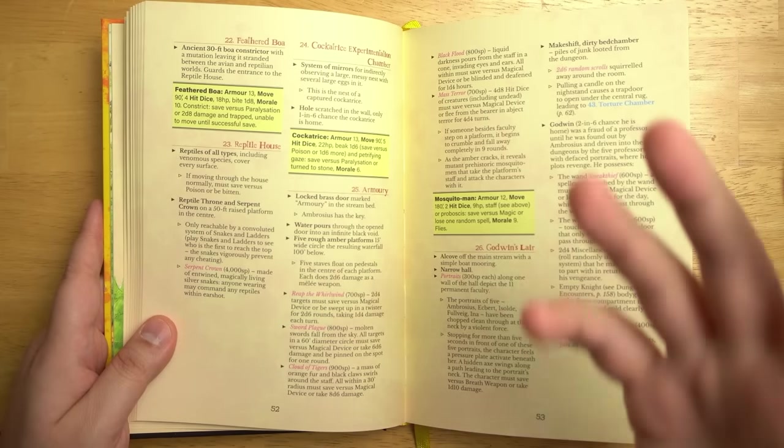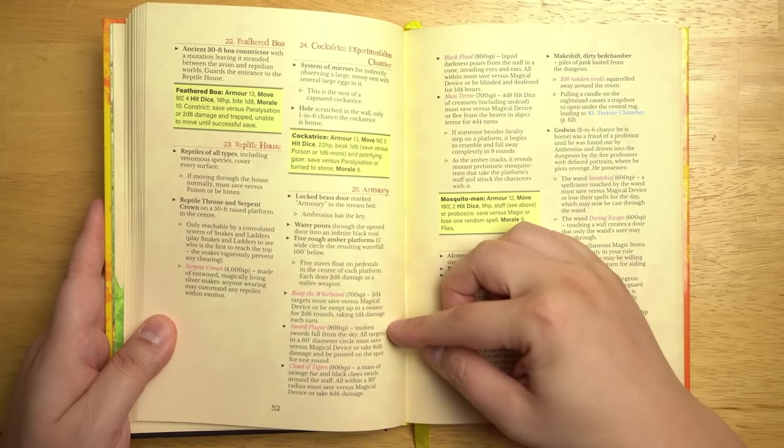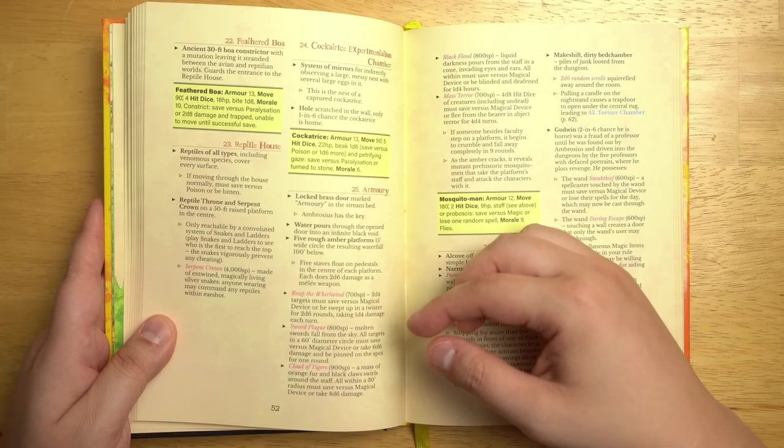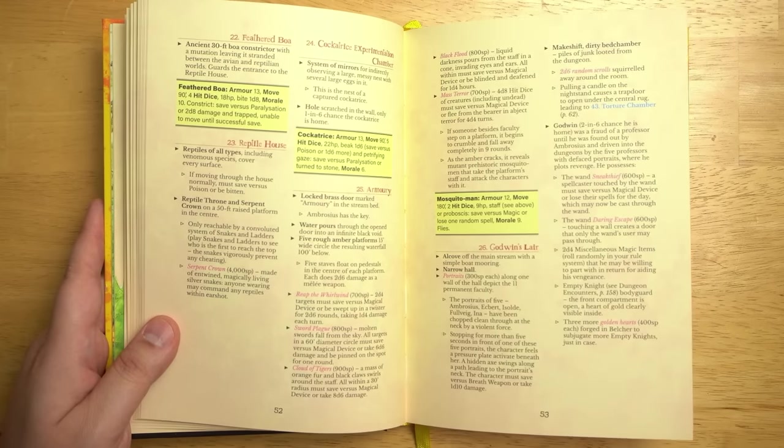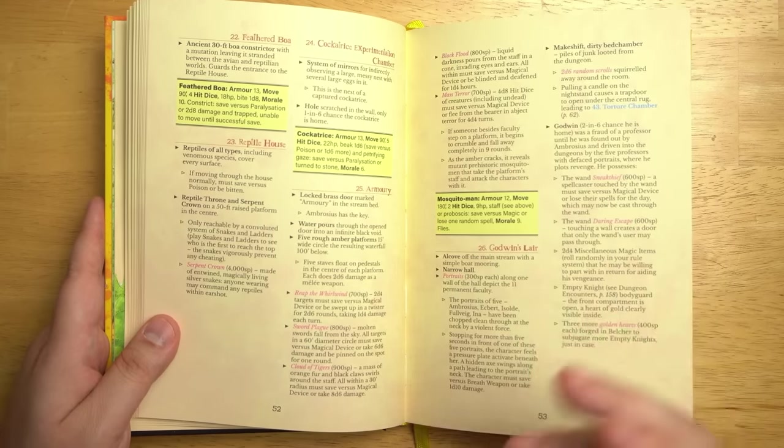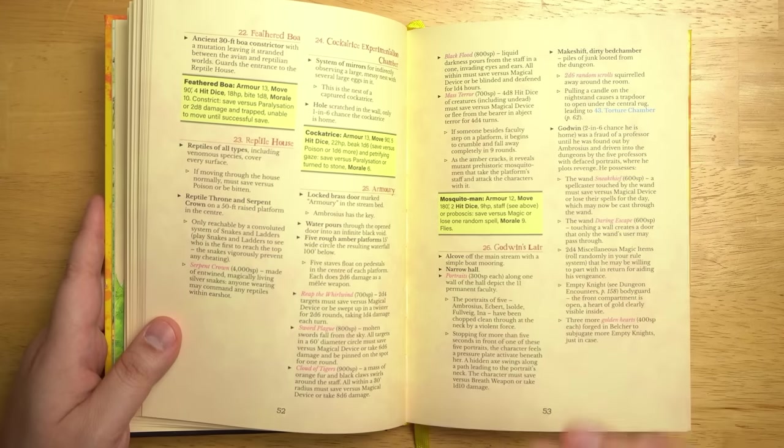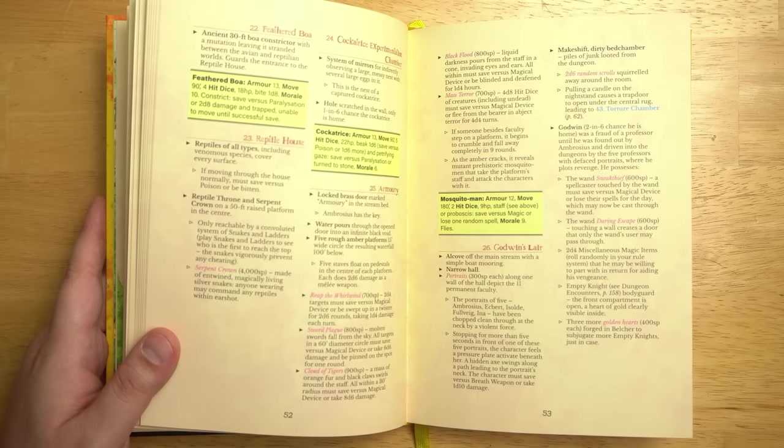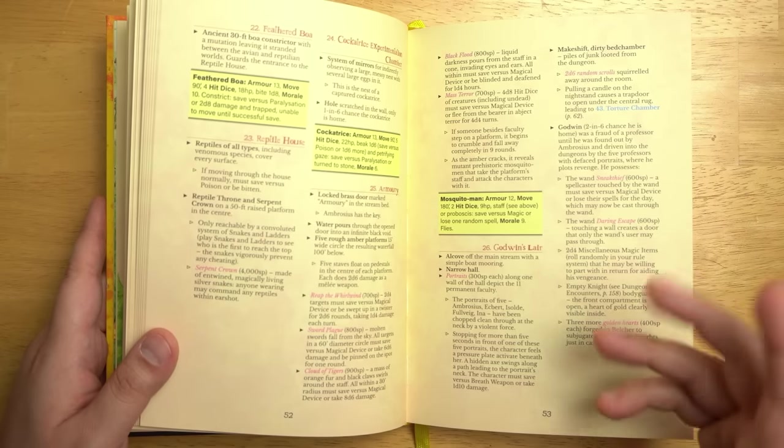There are some really fun weapons that you can find in the armory right here, like sword plague. Molten swords fall from the sky. All targets in a 60 foot diameter circle must save versus natural device or take 6d6 damage and be pinned to the spot for one round. That's great stuff. There's some traps here, but they're very clearly foreshadowed. So players can anticipate them or use them against enemies. Like a series of portraits that have all been chopped through by some powerful force. And if you stand in front of the portrait to examine it, then an ax swings at your head, right? Pretty clear what's gonna happen there if you're paying attention. I like traps like that.